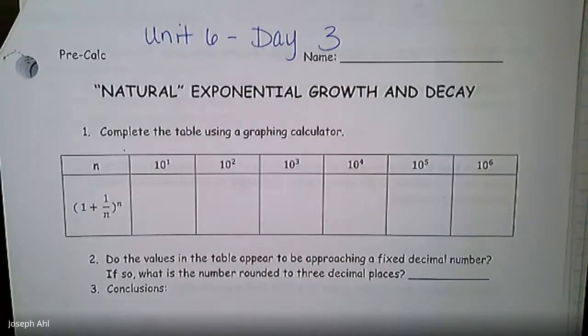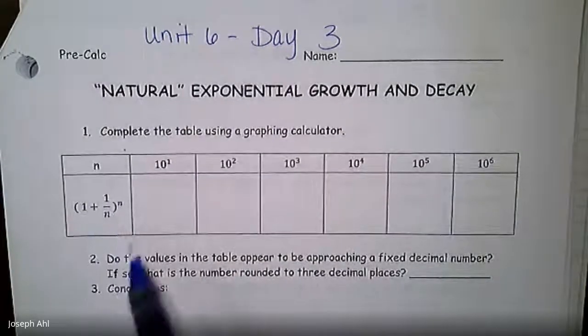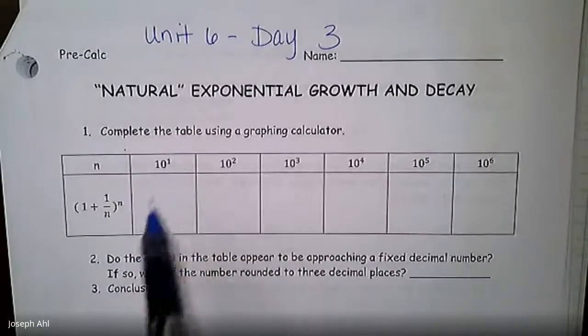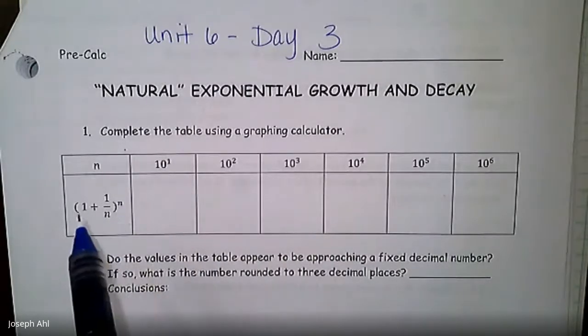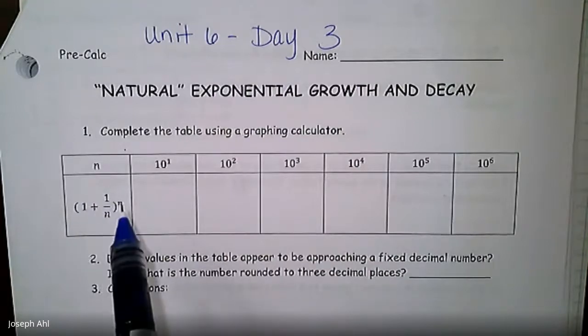So to generate what the natural exponent is, and I think you will be familiar with this from Algebra 2 last year, we're going to look at this table of values for the expression (1 + 1/n)^n. I want to plug in 10 for n in both those spots, so the first evaluation would be (1 + 1/10)^10.